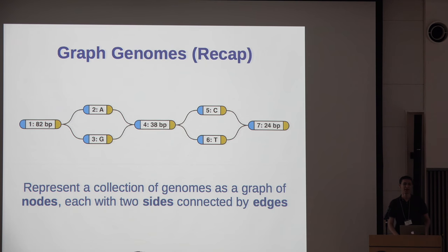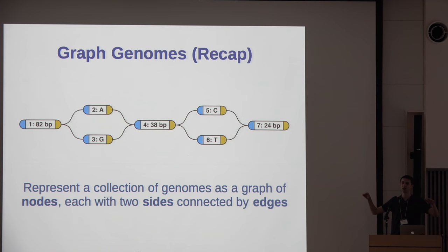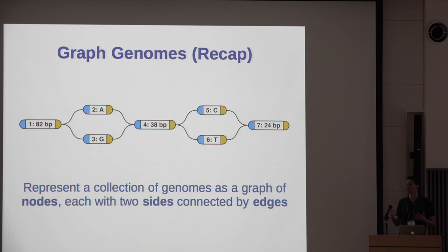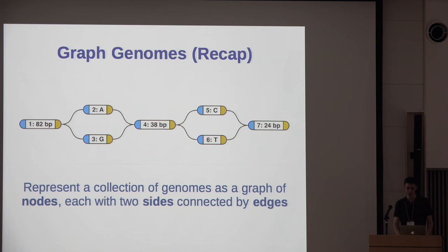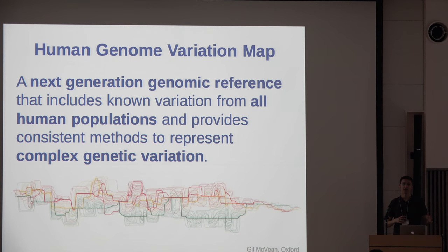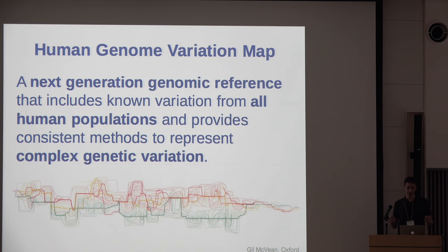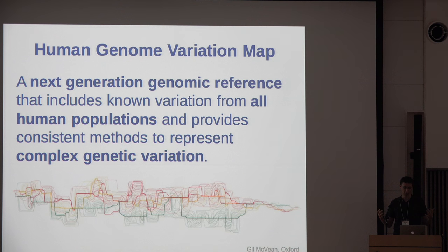Just to recap: the basic idea is that we have a graph representation of a genomic reference. Instead of just having one linear sequence, you can branch out into multiple nodes and then come back together. We have nodes connected at different sides by edges, forming a genome graph. At UC Santa Cruz we're particularly interested in applying this for the Human Genome Variation Map, a next-generation genomic reference that includes variation from all human populations and helps represent complex genomic variation not easily represented in the current linear reference context.